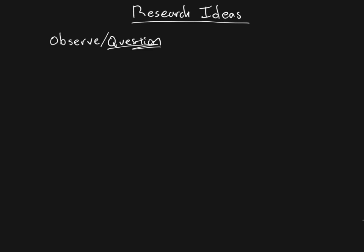So this section of the class is really about that first step — coming up with a good question — and then moving from just something you're wondering about into creating a formal research proposal. That is the direction we are headed: for a future assignment you are going to actually create what's called a research proposal.